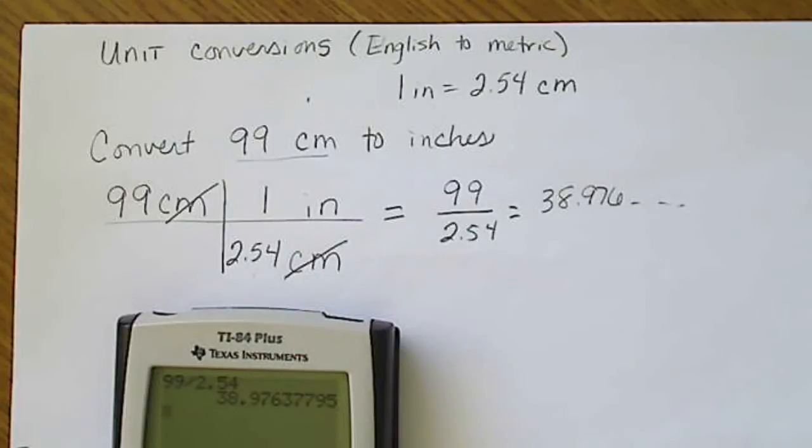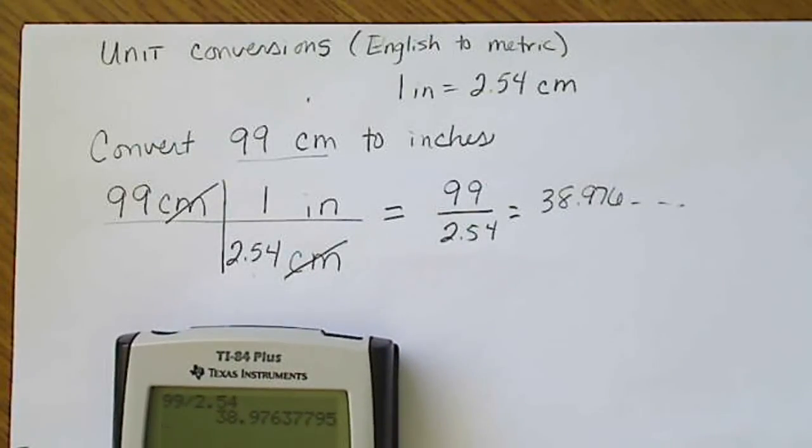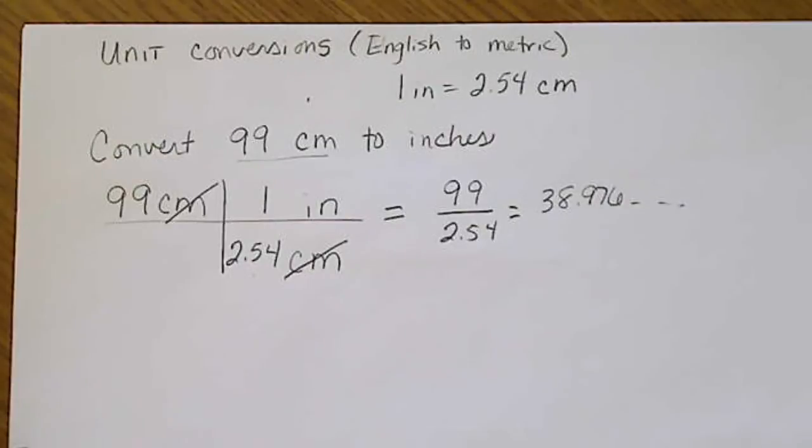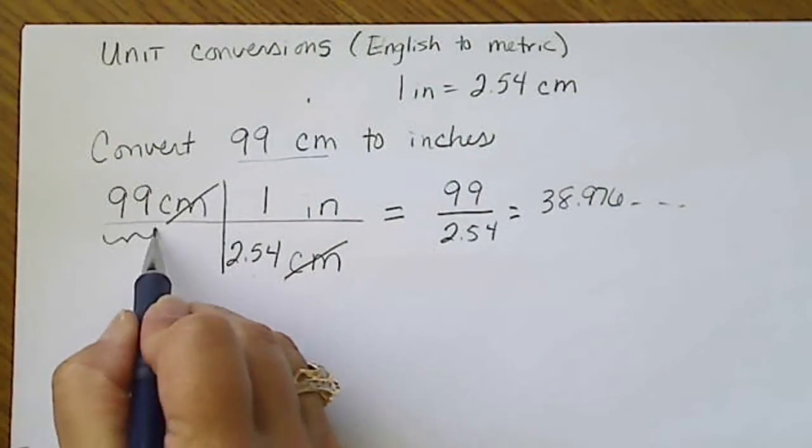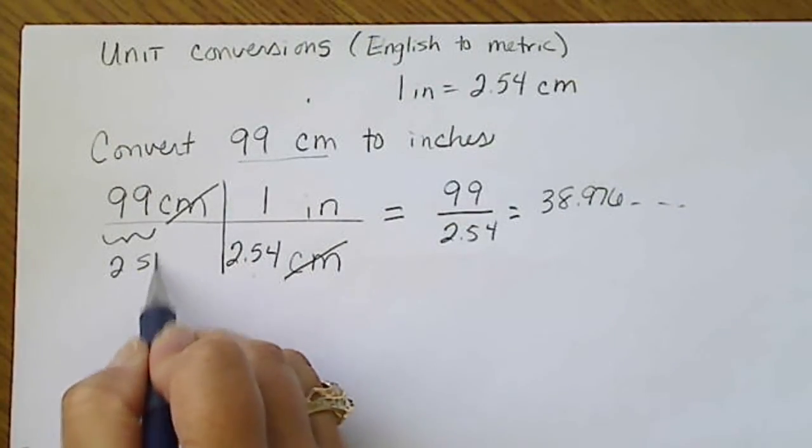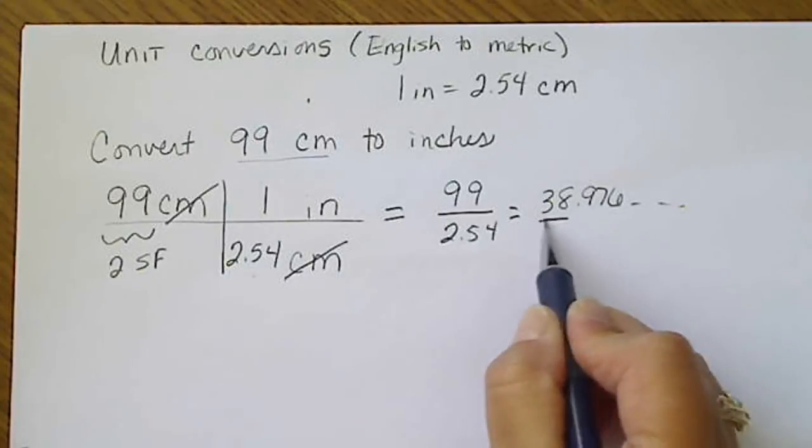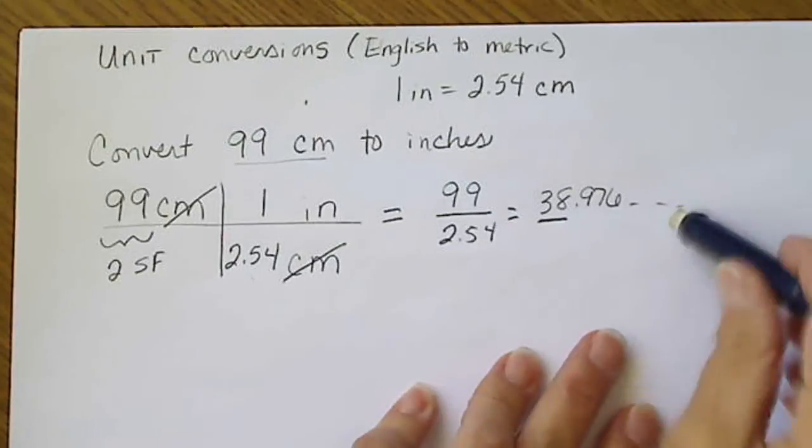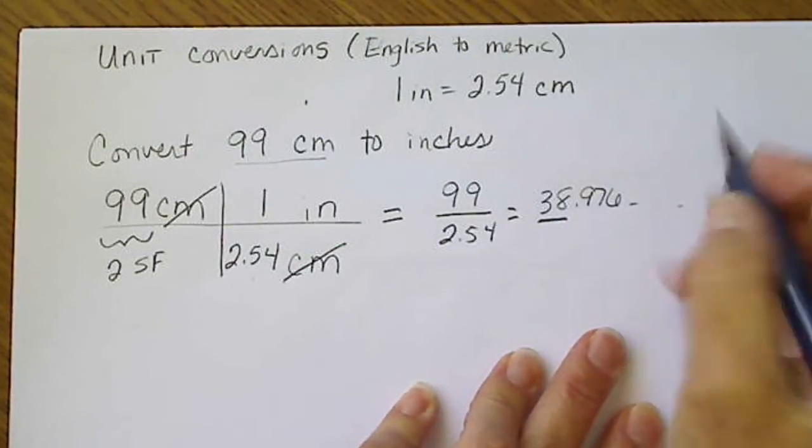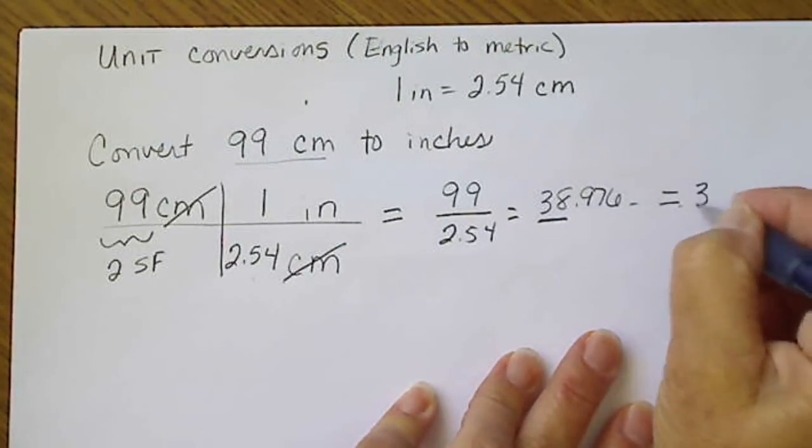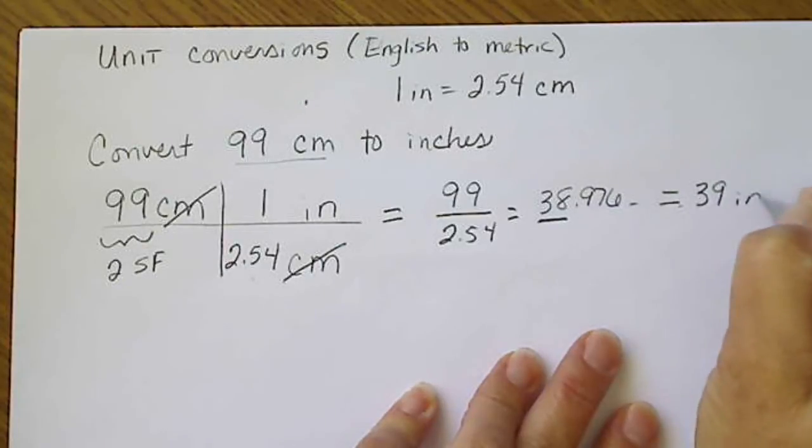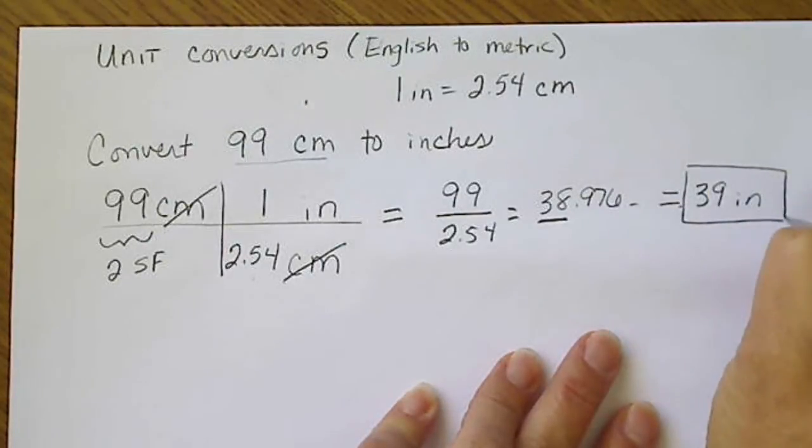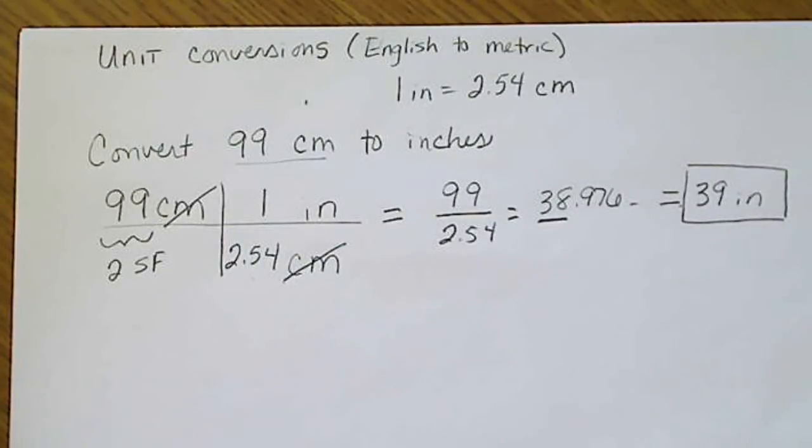We are also going to keep in mind the concept of significant figures. Our original measurement has two significant figures, so we would round this answer to two significant figures. The way we would report that correctly would be 39 inches.